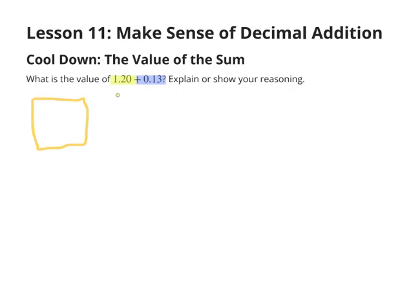If we were using base 10 blocks, we would use a square to represent the ones place. We would represent an entire rod, which is 10 single hundredths, to represent the tenths place. So this shows one and two tenths, or one and twenty hundredths.